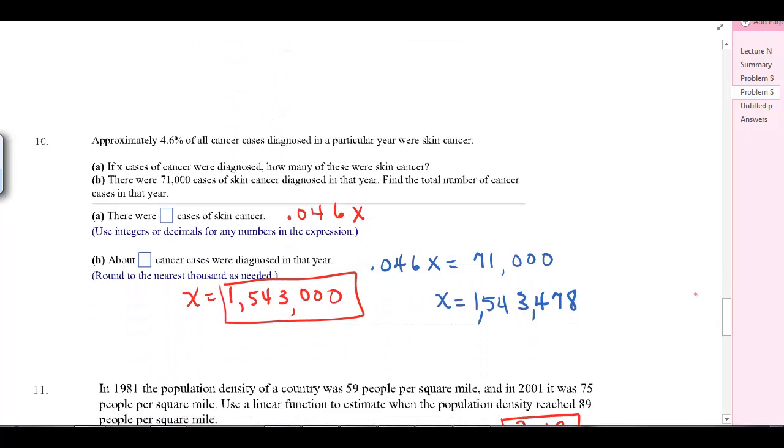Approximately 4.6% of all cancer cases diagnosed in a particular year were skin cancer. If x cases of cancer were diagnosed, how many cases were skin cancer? 4.6% written as 0.046x. There were 71,000 diagnosed in that year. Find the total number of cancer cases. 0.046x equals 71,000. Divide 0.046 and you get x equals this number. It says round to the nearest thousand. You're looking at this digit and rounding. You would round down because you're not at 5 here. The answer would be 1,543,000.